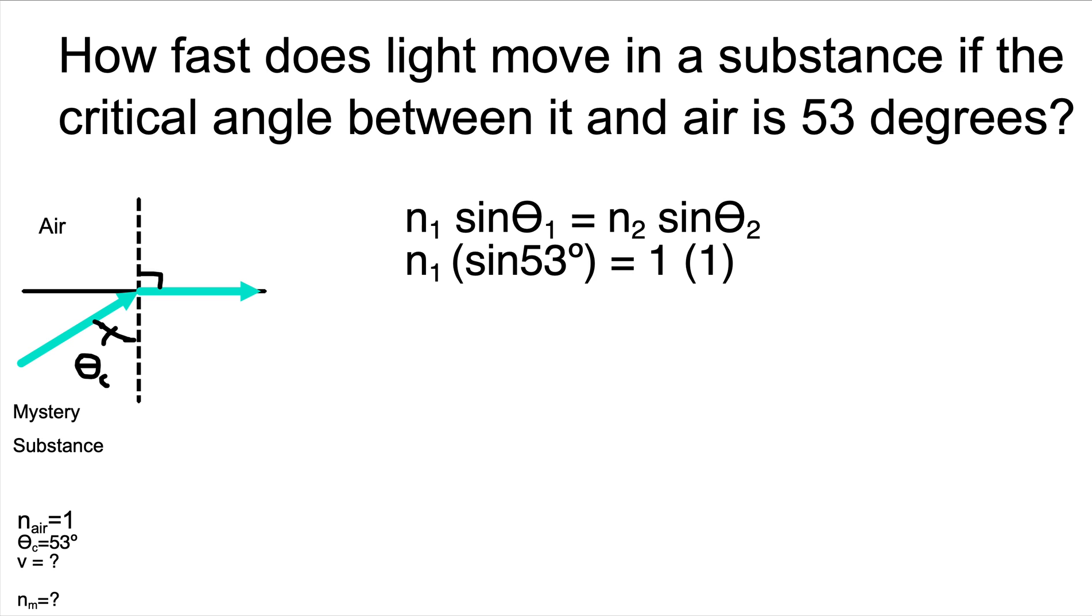To get n1 by itself, we need to divide both sides by the sine of 53 degrees. So the sine of 53 will cancel on the left-hand side of the equation. That will leave us with n1 equals 1 divided by the sine of 53 degrees. When we plug that into our calculator, we get the index of refraction of the mystery substance is 1.25.